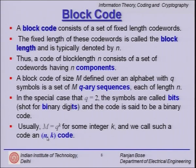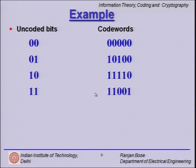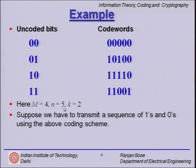The encoding procedure takes uncoded bits and makes codewords out of them. In a simple example with k equal to 2, the input bits are 00, 01, 10, 11, and we have four corresponding codewords. Here n is equal to 5, each codeword is 5 bits long, and k is 2. So this is a (5, 2) block code.